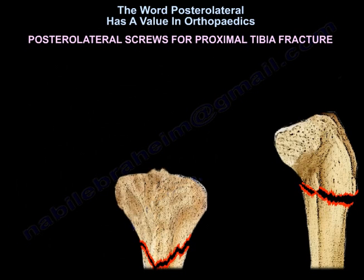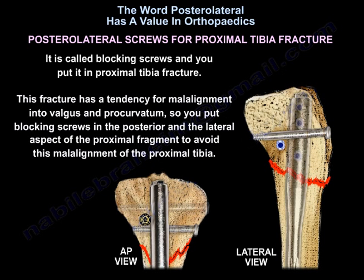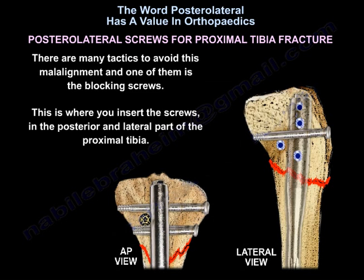Posterolateral blocking screws are used in proximal tibial fractures. These fractures have a tendency for malalignment into valgus and procurvatum, so you place the blocking screws in the posterior and lateral aspect of the proximal fragment to avoid this malalignment. There are many tactics to avoid this malalignment, and blocking screws are one of them. The screws are inserted in the posterior and lateral part of the proximal tibia.